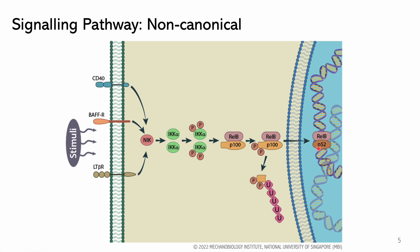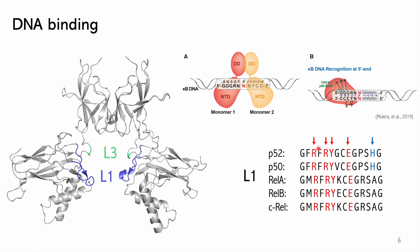DNA binding is the most interesting aspect of the proteins in this family, because first, it uses loops rather than the more common helices or sheets to bind to DNA, and second, since it exists as a dimer, it will use one of its monomers to bind to half of the consensus sequence.